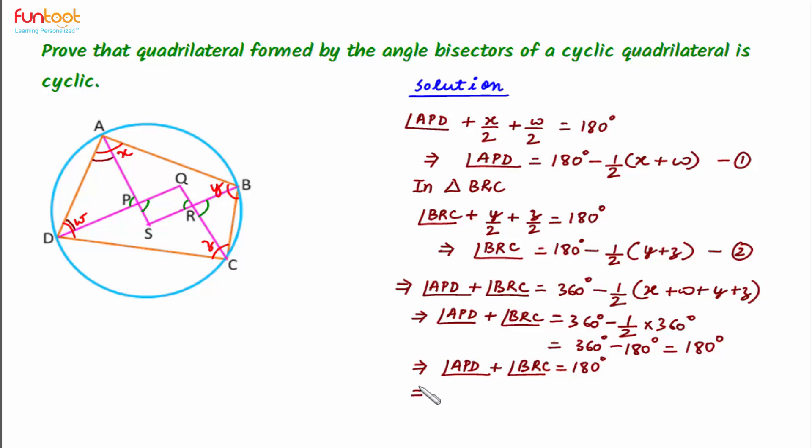This will imply angle APD is equal to angle QPS. So here we can write angle QPS plus angle BRC is equal to angle QRS, which equals 180 degrees.